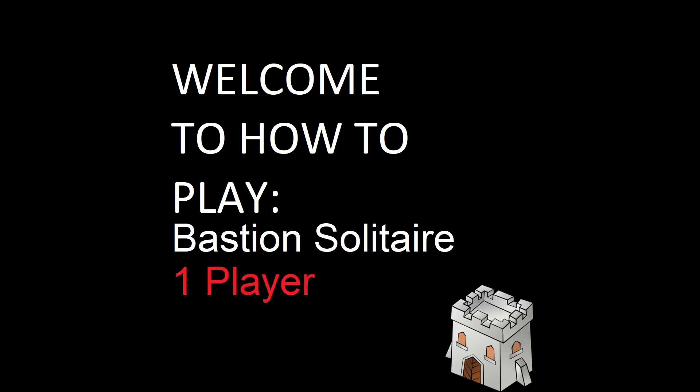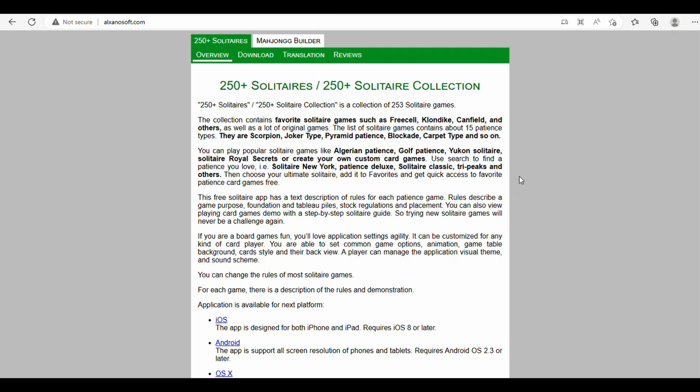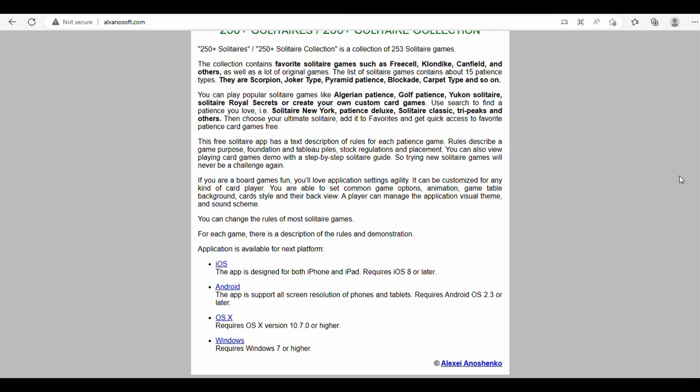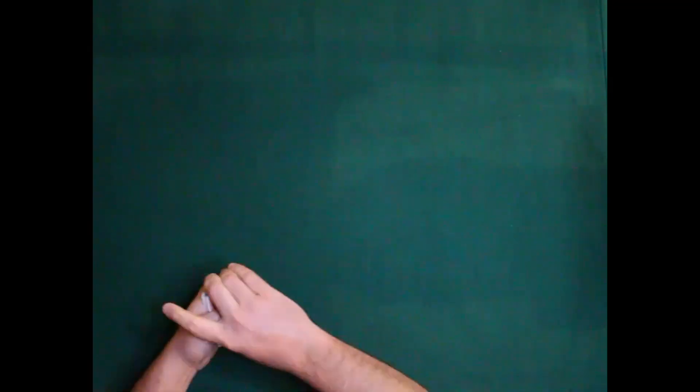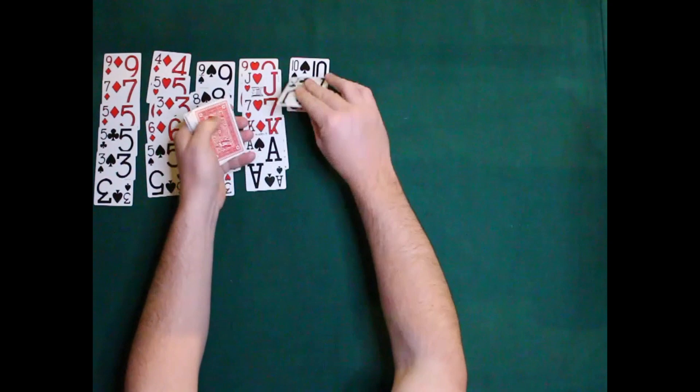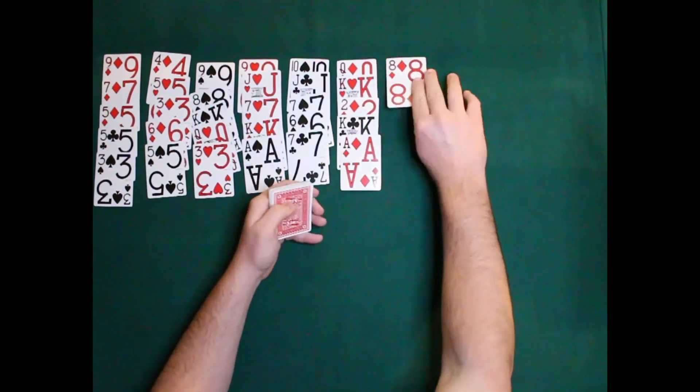Hello, welcome to How to Play Bastion Solitaire, a game for one player. This game comes to us from the 250 Plus Solitaires app, and it is a single-deck solitaire of the FreeCell family. So what we're going to do is deal 10 columns of five cards each. We'll have two cards left over which we will put in the free cells.